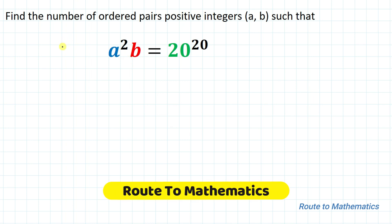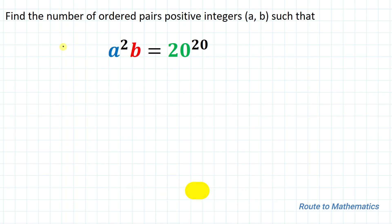Hello everyone, welcome to Root 2 Mathematics. In this video we are going to solve an interesting olympiad question. The given question is: find the number of ordered pairs of positive integers (a, b) such that a squared times b equals 20 to the power 20. We are asked to find the number of ordered pairs of this given equation.